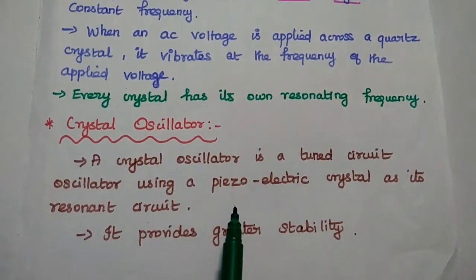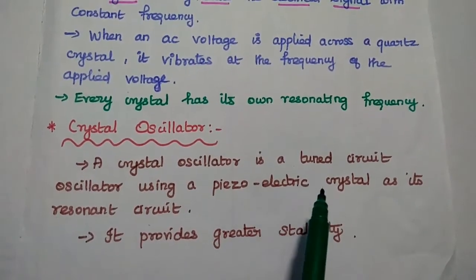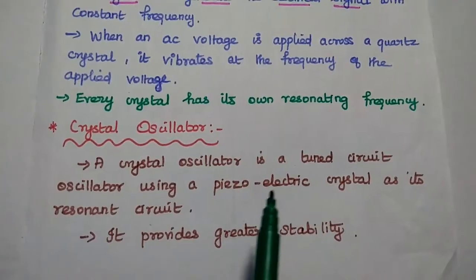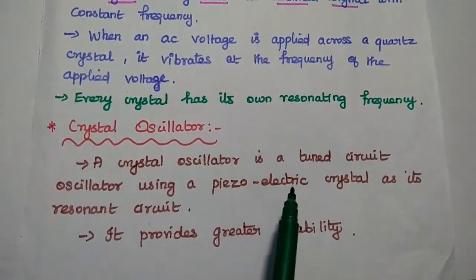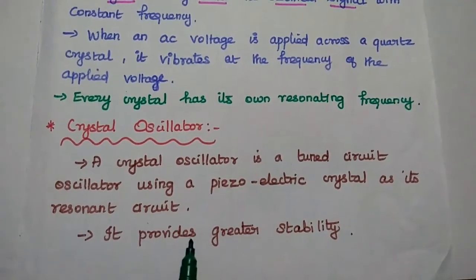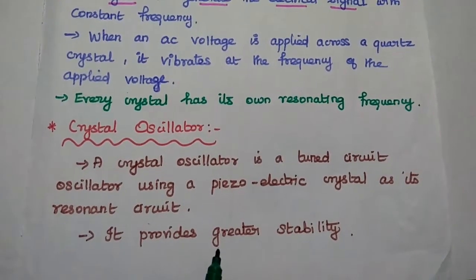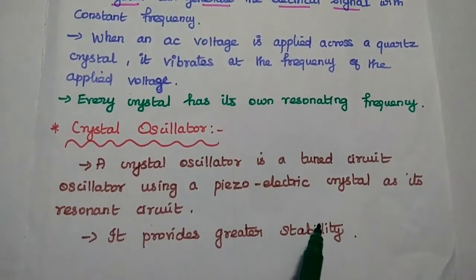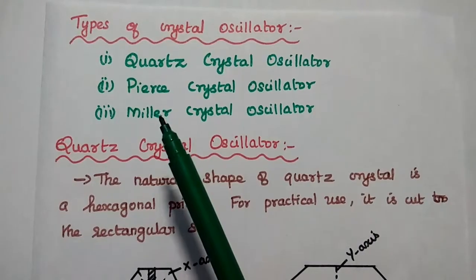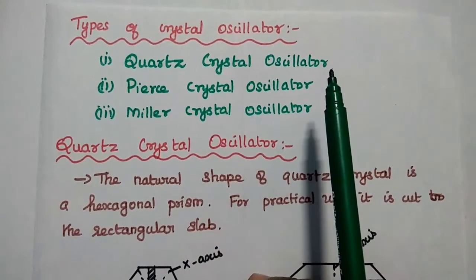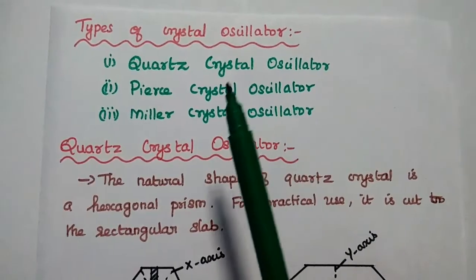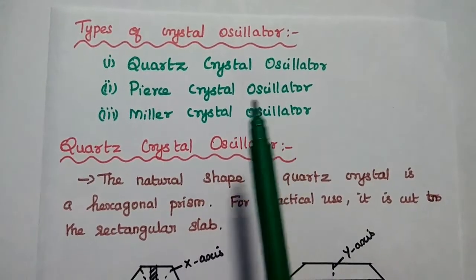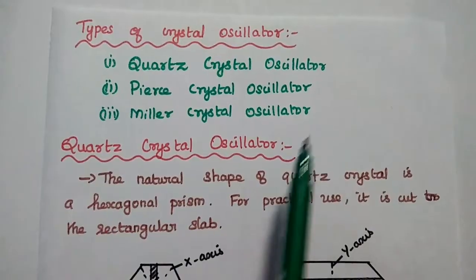A crystal oscillator is a tuned circuit oscillator using a piezoelectric crystal as its resonant circuit. We can use the piezoelectric crystal as the tuned circuit to generate the signal. This crystal oscillator provides greater frequency stability. Types of crystal oscillator are: quartz crystal oscillator, Pierce crystal oscillator, and Miller crystal oscillator.